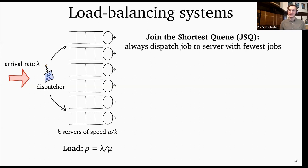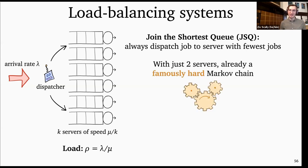JSQ queue systems definitely qualify as complex systems. Even with just two servers, the JSQ results in a famously difficult two-dimensional Markov chain — it has this scary infinite triangle Markov chain. There is some interesting work analyzing the two-server version, but when you start adding servers, you add dimensions, and it becomes intractable for general k.